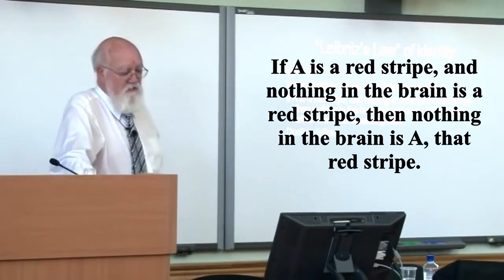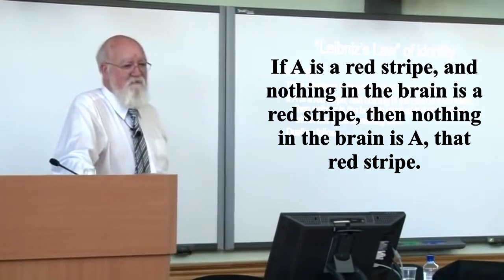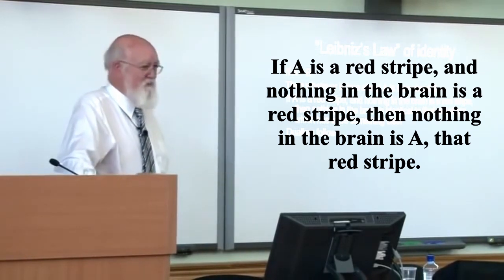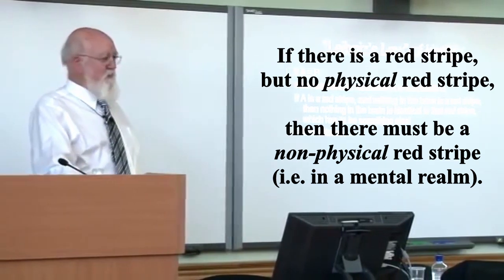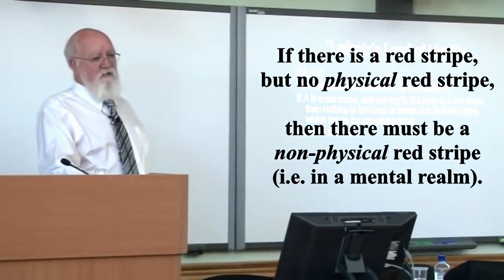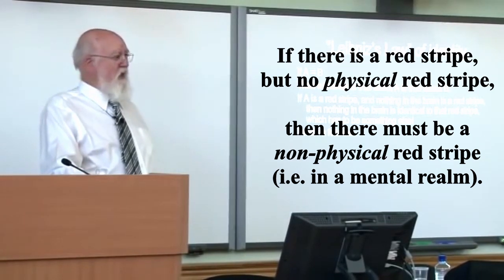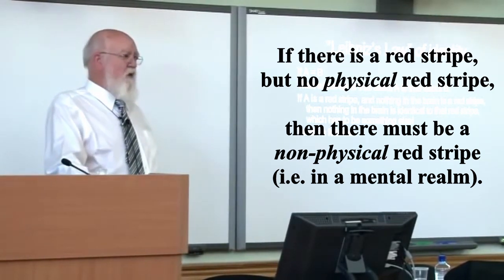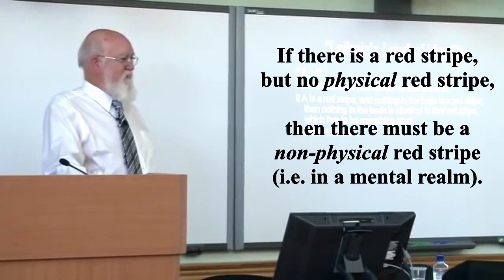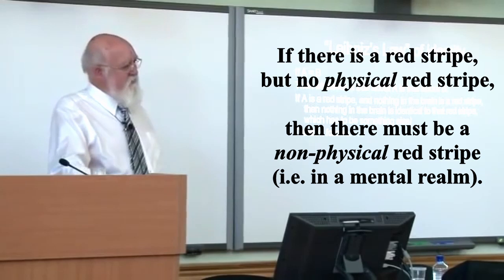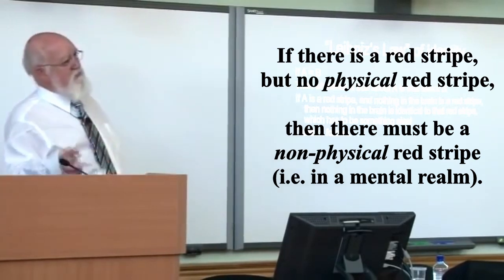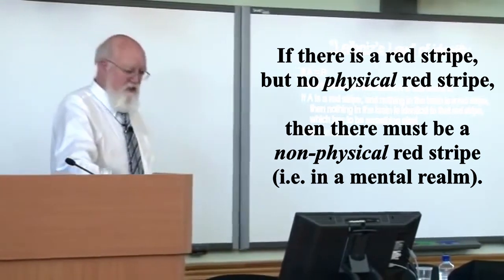And that leads to dualism. If there is no physical red stripe anywhere, then there must be a non-physical red stripe somewhere. This is, I think, the simplest argument for dualism and in some ways the best because it brings out the challenge to materialism. I, as a materialist, have to face this challenge.